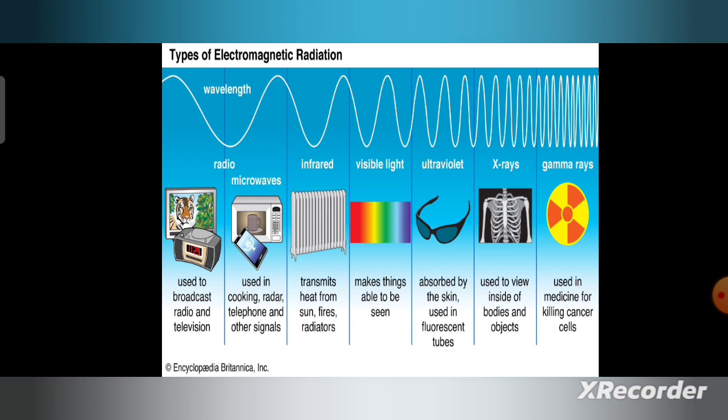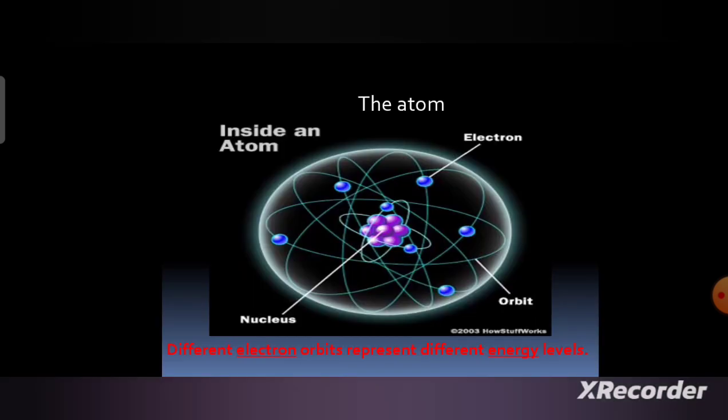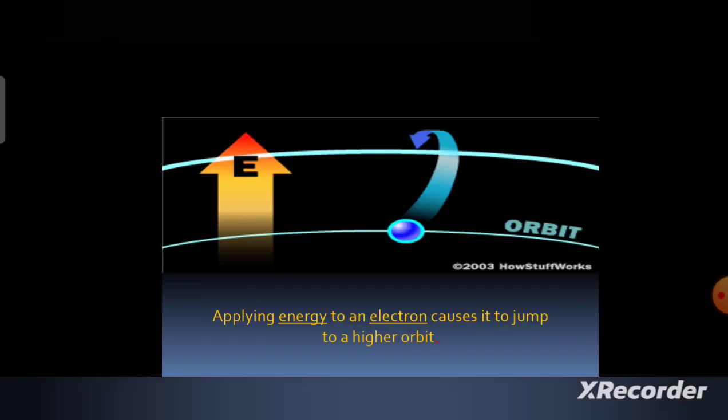This figure shows the atom. Inside an atom, it includes electrons, nucleus, and orbits. Different electron orbits represent different energy levels. When an electron jumps from one orbit to a higher orbit, applying energy to an electron causes it to jump to a higher orbit.